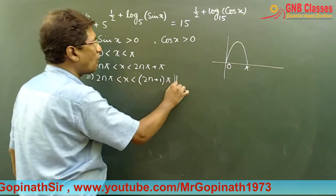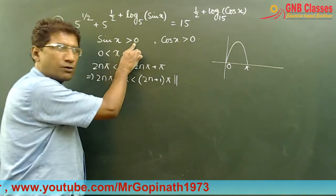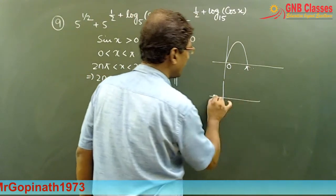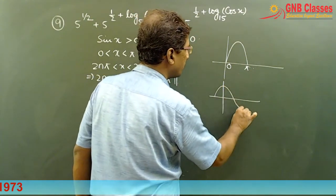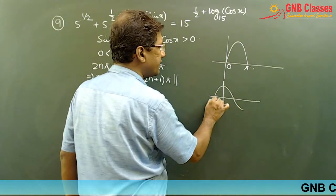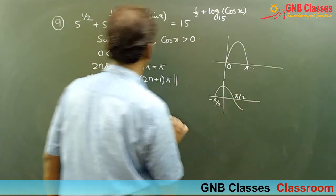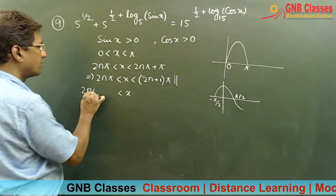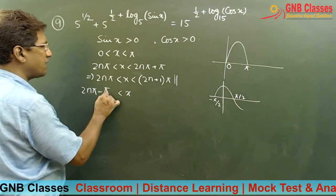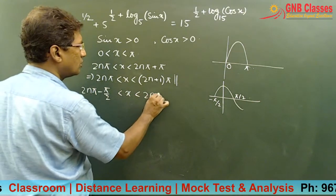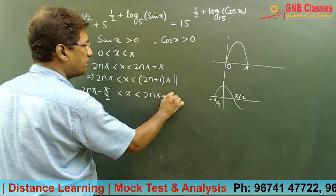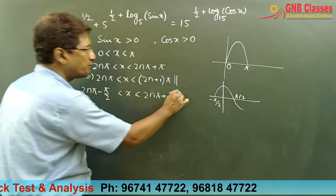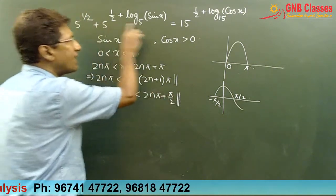For cos x greater than zero, nearby the origin it is from minus π/2 to π/2. So we write x is greater than 2nπ minus π/2 and less than 2nπ plus π/2.